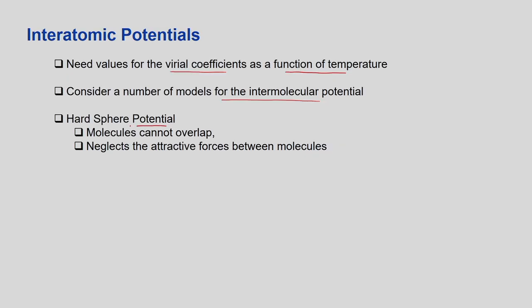We cannot find the inter-atomic potential from the virial coefficient; rather, we find the virial coefficient from the inter-atomic potential, because of the form of the expression. We start with the simplest: the hard sphere potential. The virial coefficient b2 is a function of temperature and is given by minus half of beta_1, which equals 2π times the integral from 0 to infinity of (1 − e^(−u(r)/kT)) r² dr.